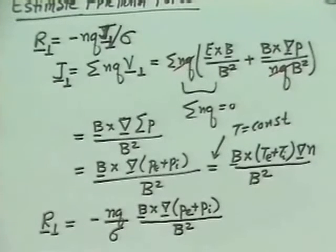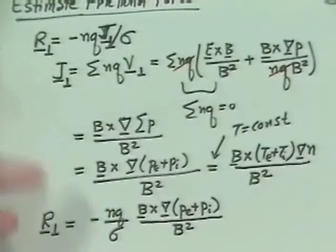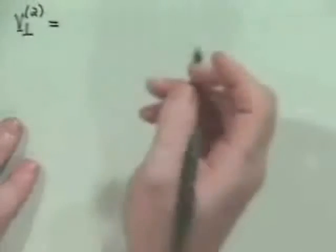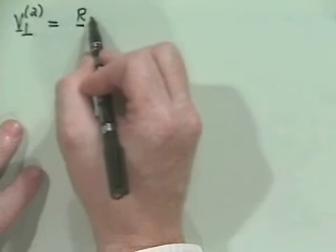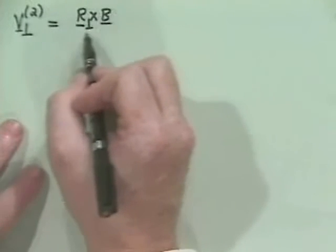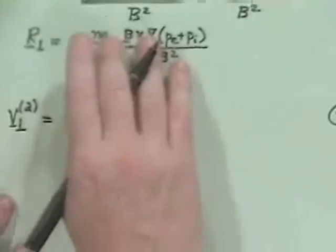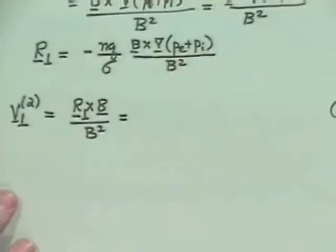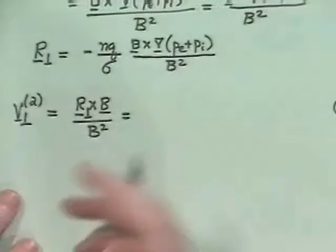With constant temperature, this becomes j_perp = B×(T_e + T_i)·∇n / B². Substituting into the friction force, the perpendicular frictional force is: R_perp = −(n·q/σ) · B×∇(p_e + p_i)/B². Now, the second-order flow from this frictional force is v_perp2 = R_perp × B / (n·q·B²), which gives a flow proportional to −B×B×∇(p_e + p_i).